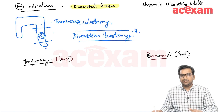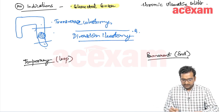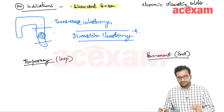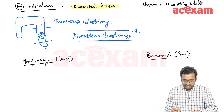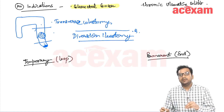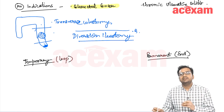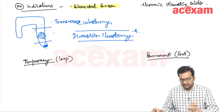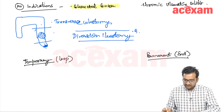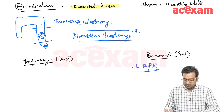Diversion ileostomy is a life-saving procedure. Stoma can be temporary or permanent. If there is a tumor at the level of the low rectum, or a tumor involving the anal sphincters or anal canal, and we do APR — abdominal perineal resection — then we will have to make a permanent colostomy.